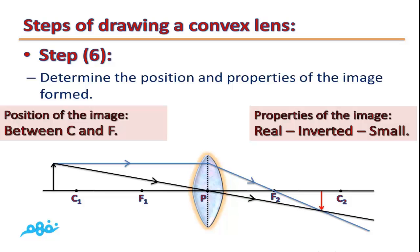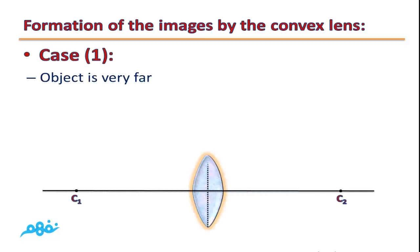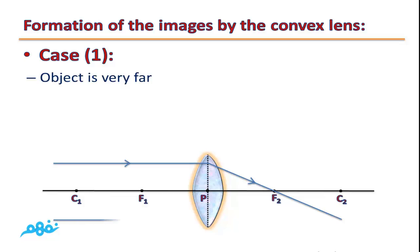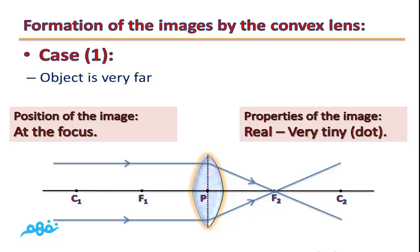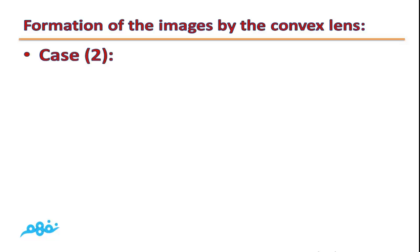In this case, the formed image is located between C and F. The image is real, inverted, and small. Image formation by the convex lens — Case 1: the object is very far away, so light rays coming from it are parallel to the principal axis. They refract and pass through the focus, so the image is formed at the focus. The image is real and very tiny, reduced to a point.